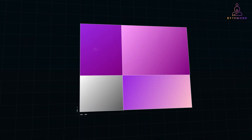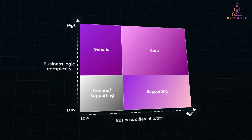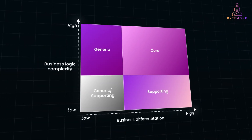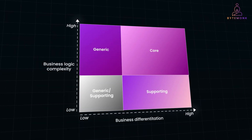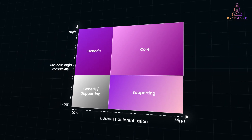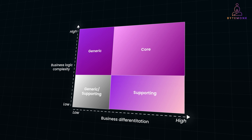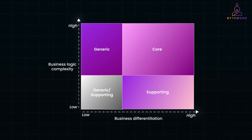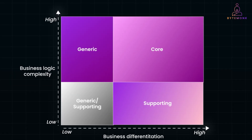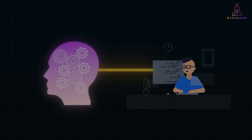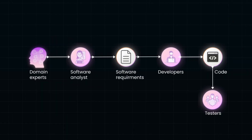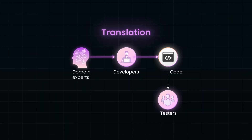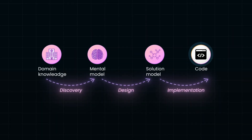Previously, we delved into the concept of business domains — how to identify a company's key areas of activity and analyze its strategies within those subdomains, including their boundaries and types. In this video, we'll zoom in further to explore what happens within a subdomain, focusing on its business functions and logic.